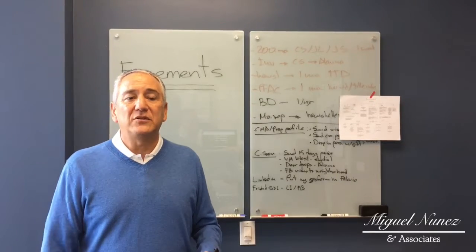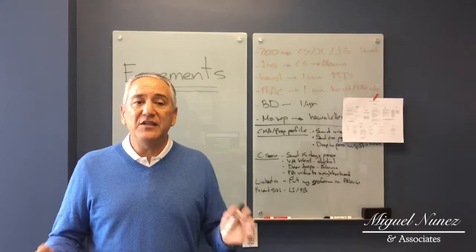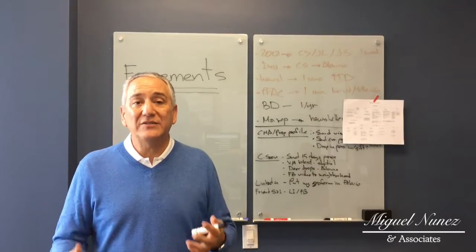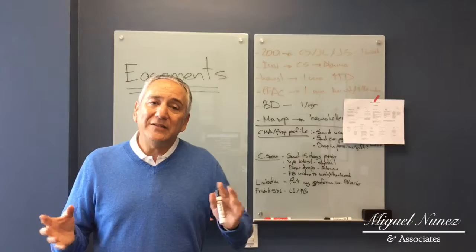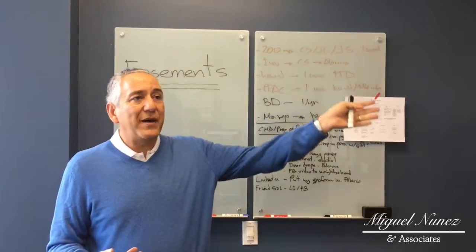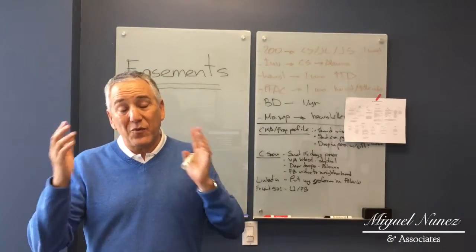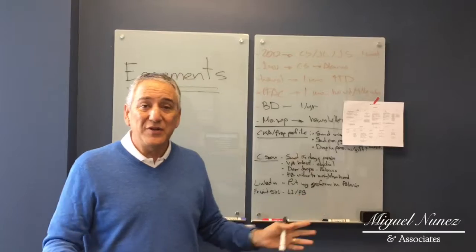Easement owners have the right to maintain the easement and have legal rights to access as well. It gets a little tricky here because let's say you have to go through this easement to get to your house in the back and the trees are growing in front of your path. Well, typically you have the right to cut those branches, but they're not really your tree. So it can get a little tricky.